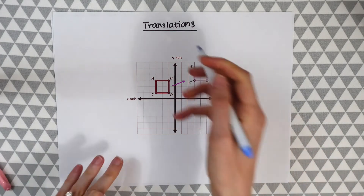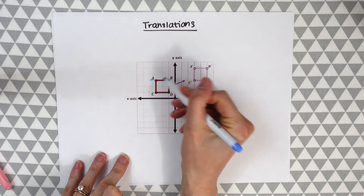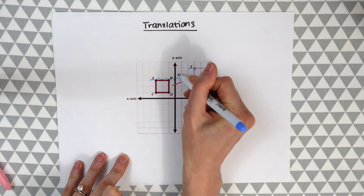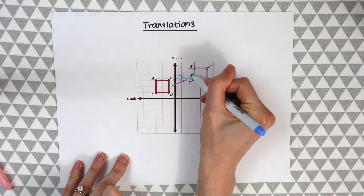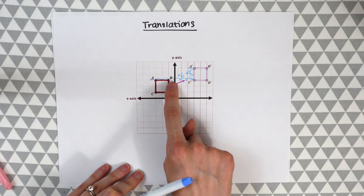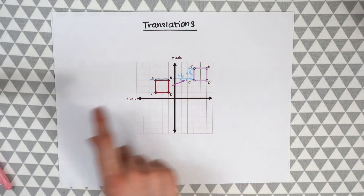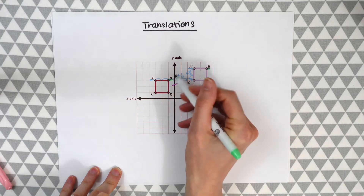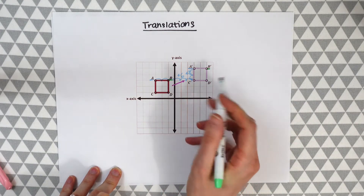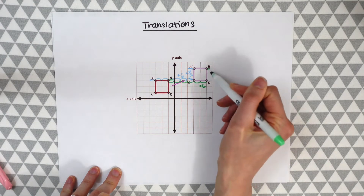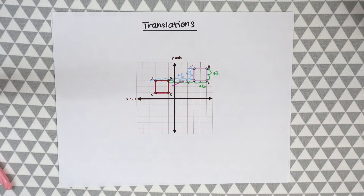If you look at each point — for example, from point A to point A' — you'll see that we went six points to the right and two points up. If you checked each coordinate pair, you would see they all went six points to the right and two units up. Looking at B to B', we also went six units to the right and two units up. So that's what a translation looks like.